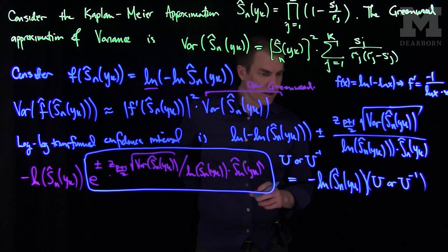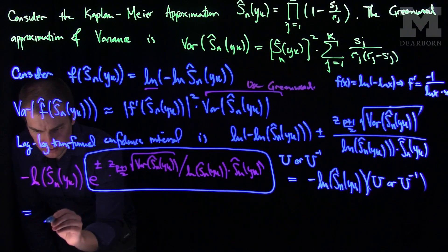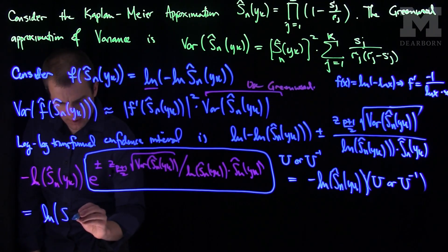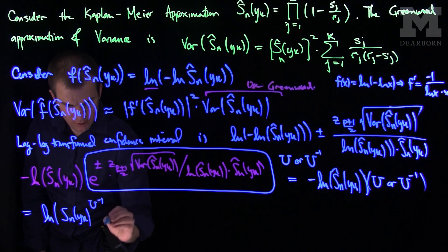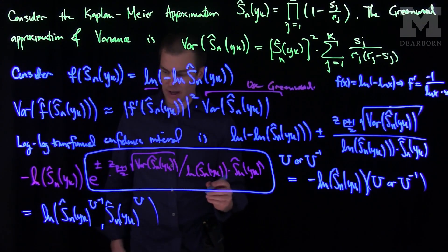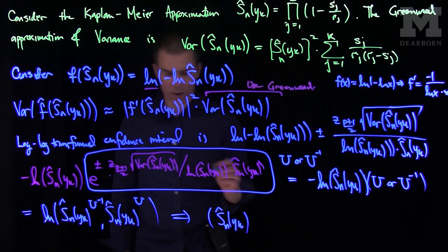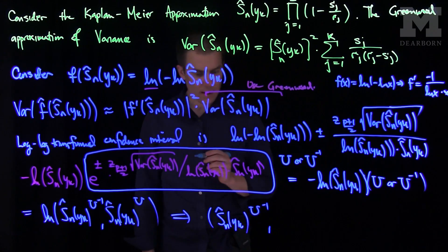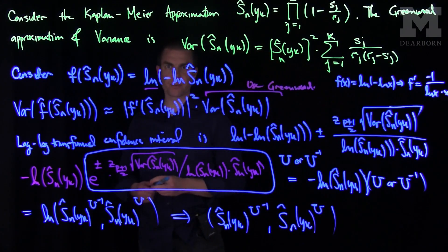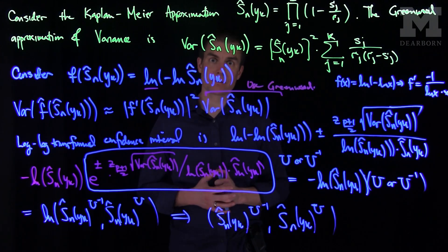Negating and exponentiating once more, the u factors become exponents: Sn_hat(yk)^(u^{-1}) and Sn_hat(yk)^u. So our log-log transformed confidence interval is (Sn_hat(yk)^(u^{-1}), Sn_hat(yk)^u). That is our log-log transformed confidence interval for the Greenwood approximation of the Kaplan-Meier estimate of the survival function. Thank you very much.